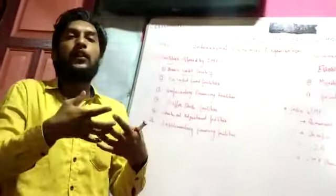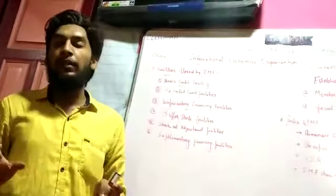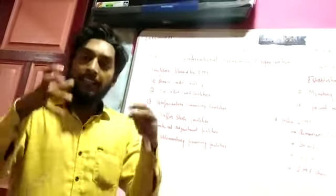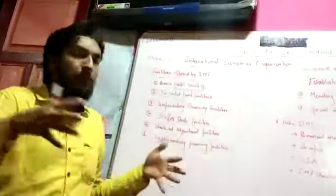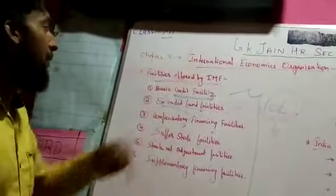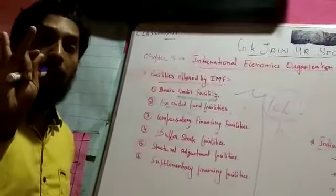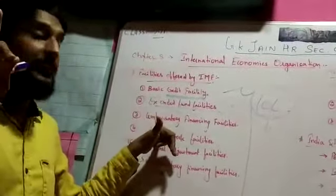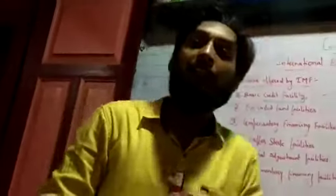And the last: supplementary financing facilities. If you need any financial supplementary policy, if immediately you want some money and need some actions to happen in your business, IMF is ready to help you. If over a night you need extra money and financial assistance to meet the necessary requirement of a day, IMF is going to help out. These are the various financial and non-financial facilities the IMF provides: basic credit facility, extended fund facility, compensatory facility, buffer stock facility, structural adjustment, and supplementary financing facilities.